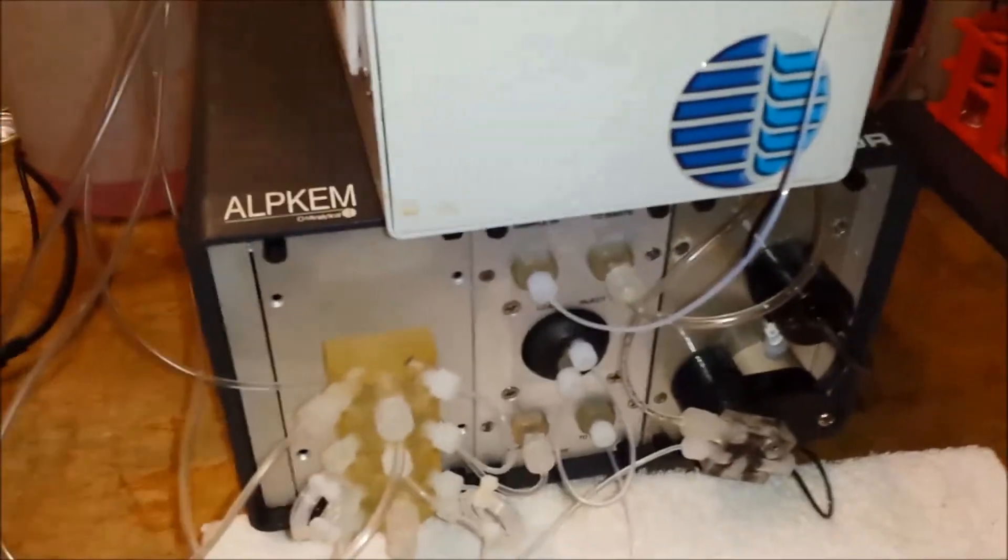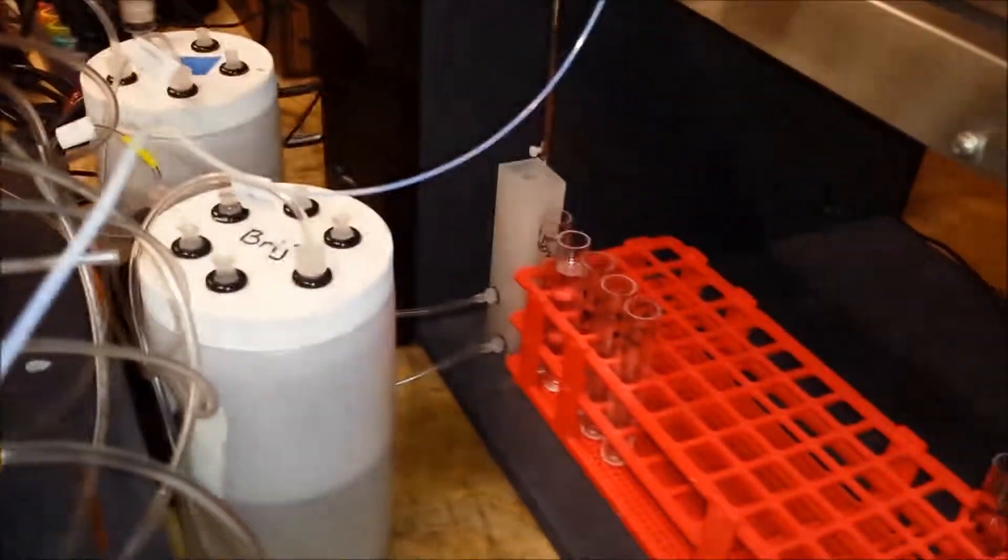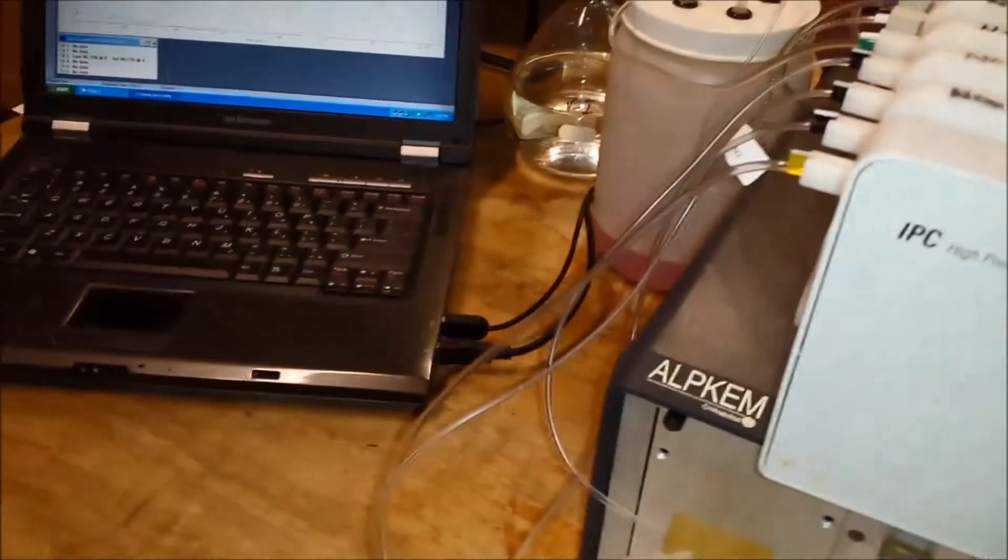The next step would be to make sure in the case of a FIA system that the loop is actually injecting into the system. And in order to do that, you simply remove the vial from the sample table, and then you hit start.